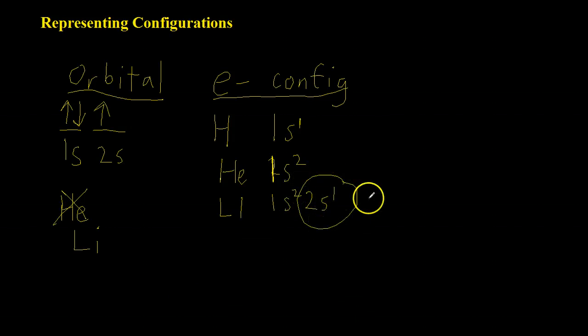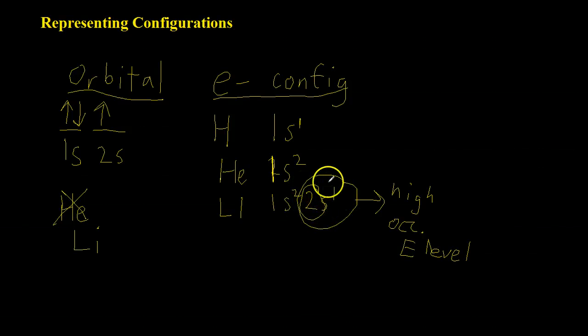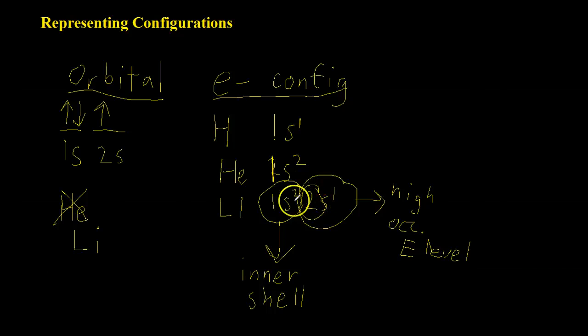And just for some quick terminology, this 2s, which is the highest energy level in lithium, which has an electron in it, is called the highest occupied energy level. And what that means for the other electrons, this is also the electrons that are in this energy level, the 2, are also known as valence electrons, because they are the ones that end up reacting during chemical reactions. And what that means is these 1s2 electrons become what are known as inner shell electrons, which basically means they're unreactive, they're sort of hidden behind the energy level, the shell of the second orbital.